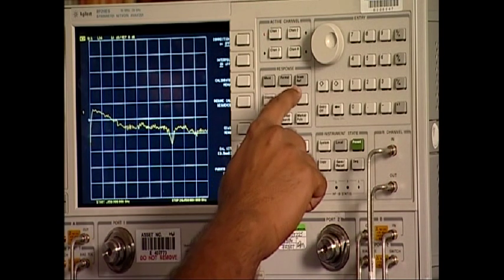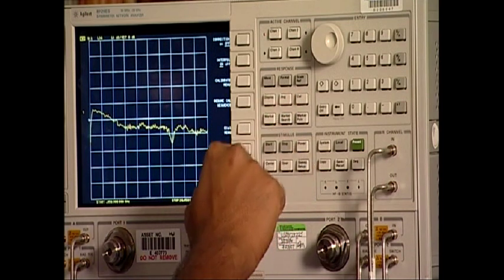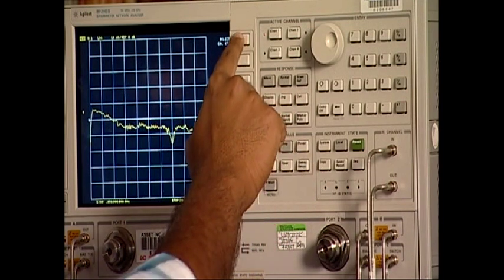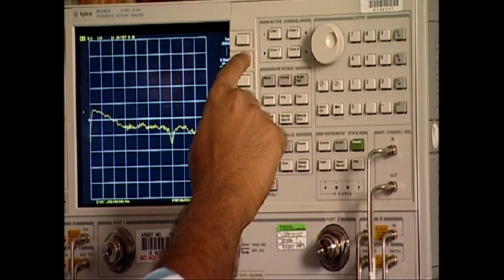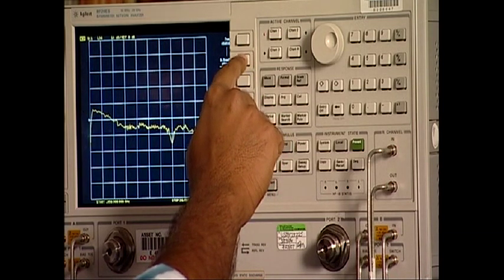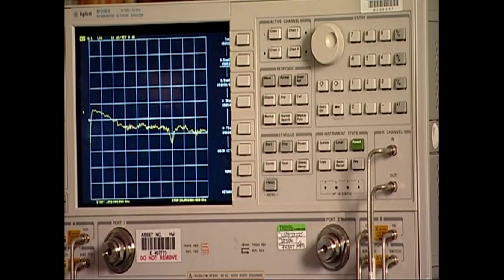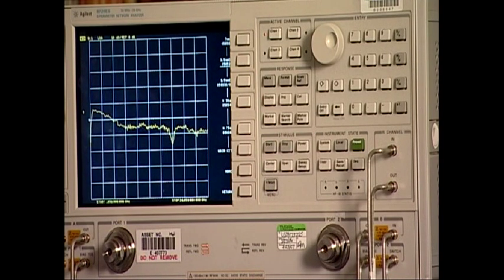We now select the calibration kit file in our analyzer. For that, we'll have to select Cal, CalKit, select CalKit and select 3.5mm d 85052, which is our calibration kit. Once we have selected the calibration file, which corresponds to the calibration kit we are using, we go ahead with the full two-port calibration.